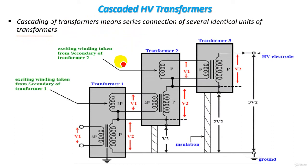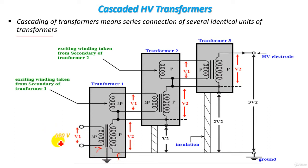This is a schematic diagram of using three cascaded transformers to produce high voltage. We have the first transformer, the second transformer, and the third transformer. For the first transformer, we have the primary winding and the secondary winding. The voltage applied to the primary winding is V1 — let's say V1 is 100 volt for simplification. The voltage of the secondary winding of the first transformer is V2, which is high voltage — let's say 100 kilovolt. So the primary voltage is 100 volt and the secondary voltage is 100 kilovolt.